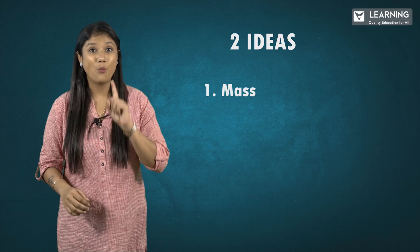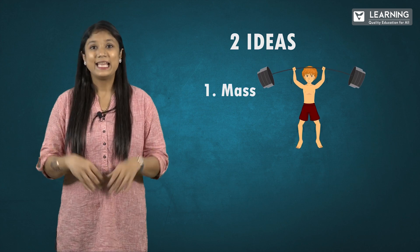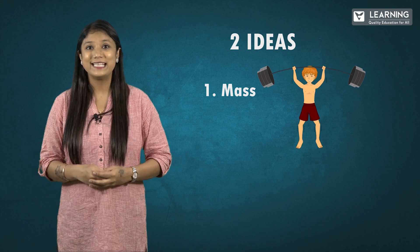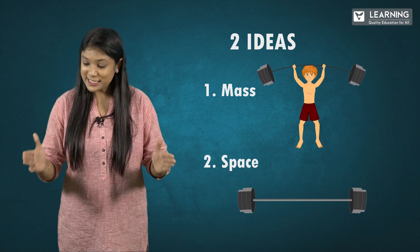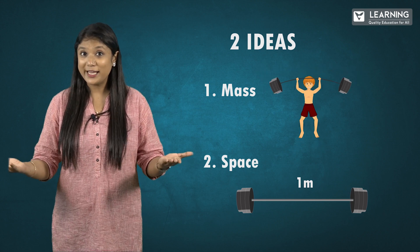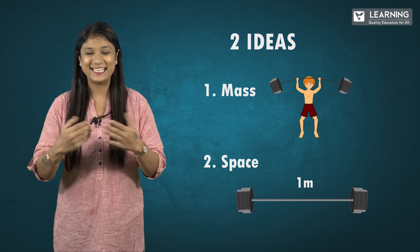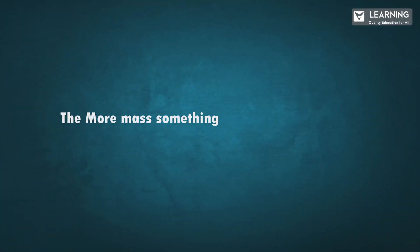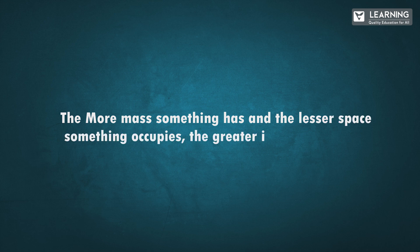The answer lies in density. Now what is density? Let's find out. To understand density, you need two ideas. Number one: how heavy the material is — the technical term for heaviness of material is mass. Number two: how much space it occupies. Take these two ideas together and you will understand density. The more mass something has, and the lesser space something occupies, gives us greater density.